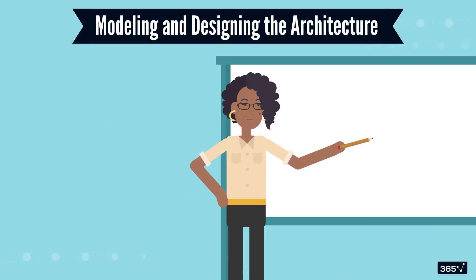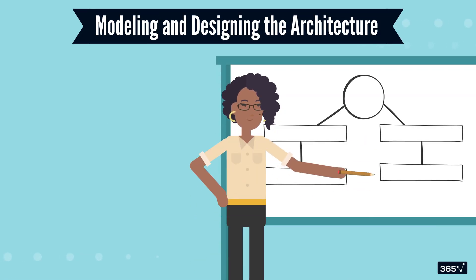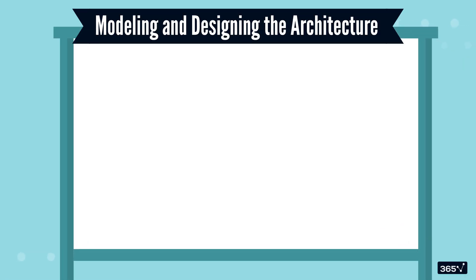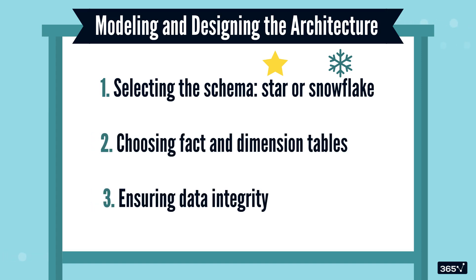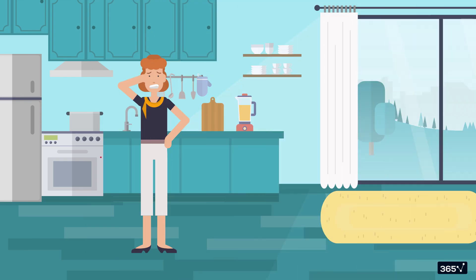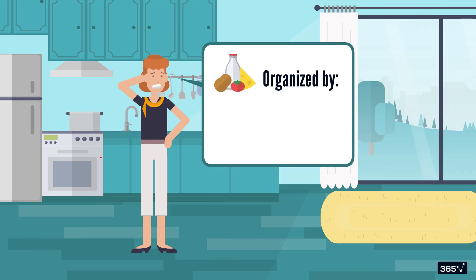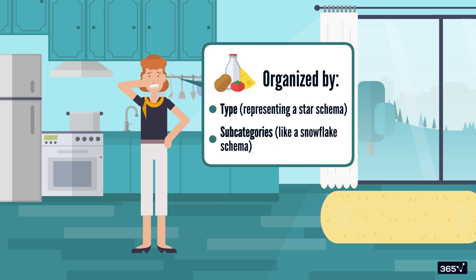Next up, step two is modeling and designing the architecture. This includes selecting the schema — for instance, star or snowflake — choosing fact and dimension tables, and ensuring data integrity. Think of this step as deciding how your kitchen should be organized. Should ingredients be grouped by type, representing a star schema, or broken down further into subcategories, like a snowflake schema? The choice depends on your data complexity and performance needs.